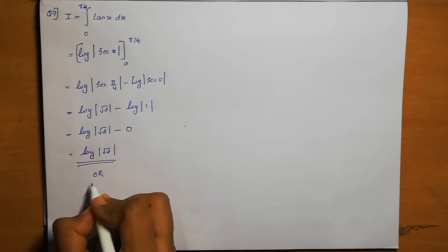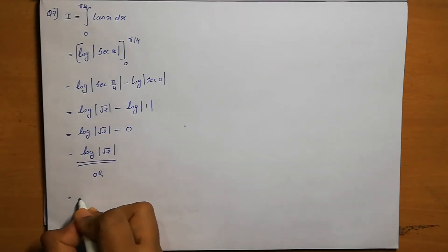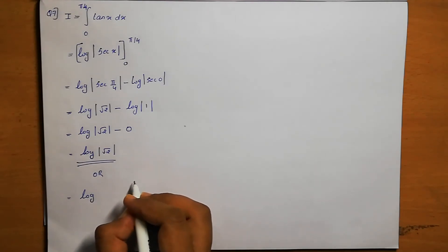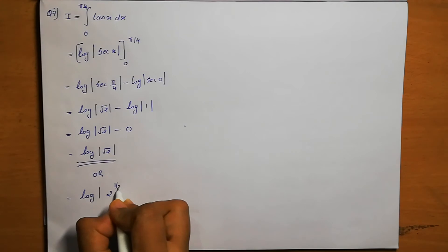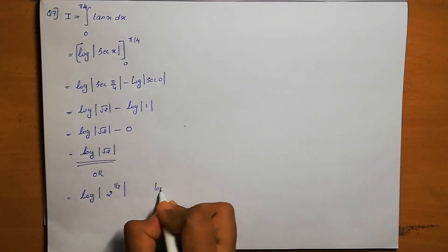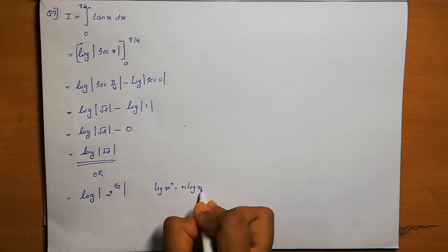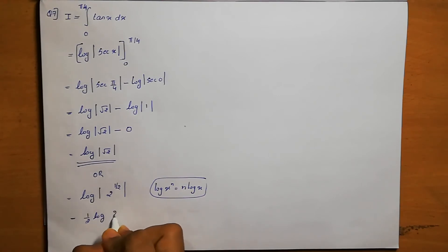Log root 2 can also be written as log 2 power 1 by 2, since root 2 equals 2 power 1 by 2. Using the identity log x raise to n equals n log x, this becomes 1 by 2 log 2. So the answer can be written as log root 2 or equivalently 1 by 2 log 2.